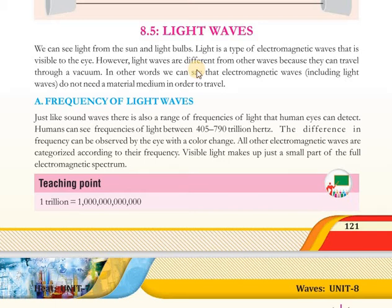Bismillahirrahmanirrahim, assalamualaikum students. Today we are going to study about light waves. Light جو ہے وہ sun سے بھی آ رہی ہے اور بہت سارے اور sources ہیں - light bulbs, tube lights وغیرہ۔ یہ electromagnetic waves ہیں جو کہ ہماری آنکھوں کو نظر آ رہی ہیں, visible to the eyes ہیں, اور یہ باقی waves سے different ہے کیونکہ یہ vacuum میں بھی travel کر سکتی ہیں۔